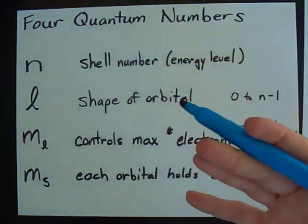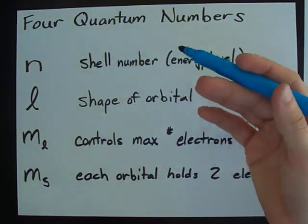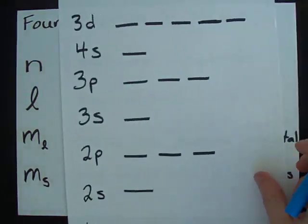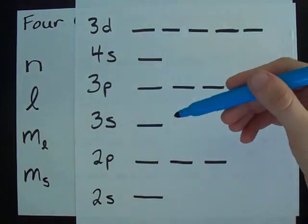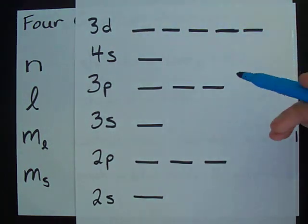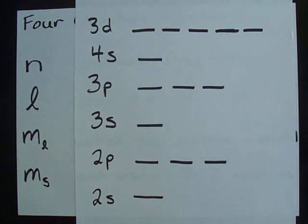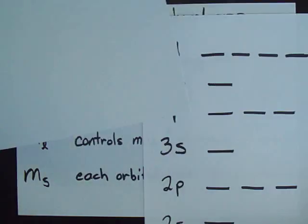The quantum numbers are really only there, and we only invented them, to help us explain why electrons sit in these energy levels the way that they do. I don't know of any other purpose for them other than that. So, let's take a look.